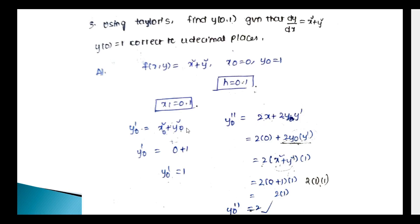Next, y₀'' = 2x + 2y·y'. At x₀ = 0: y₀'' = 2×0 + 2×y₀×y₀' = 2×1×1 = 2. Next, y₀''' = 2 + 2(y·y'' + y'·y') = 2 + 2(1×2 + 1×1) = 2 + 2×3 = 8.